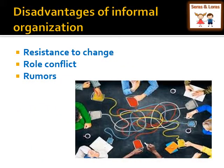The disadvantages of informal organization are: first, there is resistance to change — as this type of organization is very flexible and not rigid, there can be a chance of resistance among employees to change according to the will of the organization. Second, role conflict can occur as there is no division of work, leading to role conflict among employees. Third, rumors — as there is more informal communication among employees, there are more chances of rumors within the group.